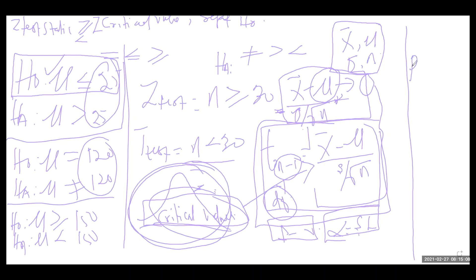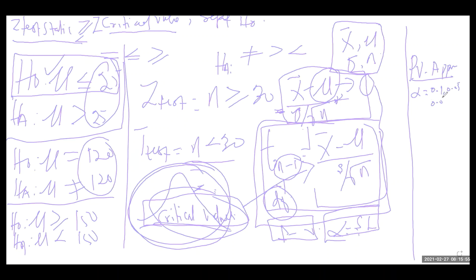Then, we also say that there is a p-value. So there are two approaches. Either we are using the critical value approach or the p-value approach. The critical value approach is where we compare the z-test statistics to the value we read from the table, which is a critical value, and we compare the two of them. If z-test statistic value is greater than the z-critical value, reject H0. If z-test statistic is less than z-critical value, we fail to reject the null hypothesis. Then we have the p-value approach: you are given an alpha value of a certain level, either 0.1, 0.05, or 0.025. You are comparing this to the corresponding probability value of the test statistic you've computed.